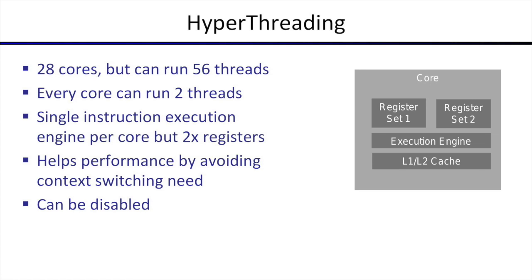When the execution engine switches to thread one it uses register set one, and for thread two it uses register set two. This helps because the execution engine is not always busy — it may be waiting on data movement. Hyper-threading lets the engine do useful work on the second thread during that wait. However, for highly compute-intensive single-threaded workloads, hyper-threading may not provide benefit. In summary: one core, one execution engine, but two register sets and two thread states.